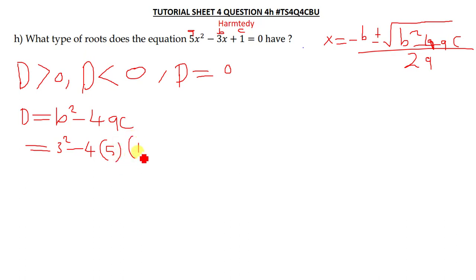Our c is 1. So this is 9 minus 4 times 5, which gives us 20. Then 9 minus 20, we get negative 11. So this is our D, negative 11.